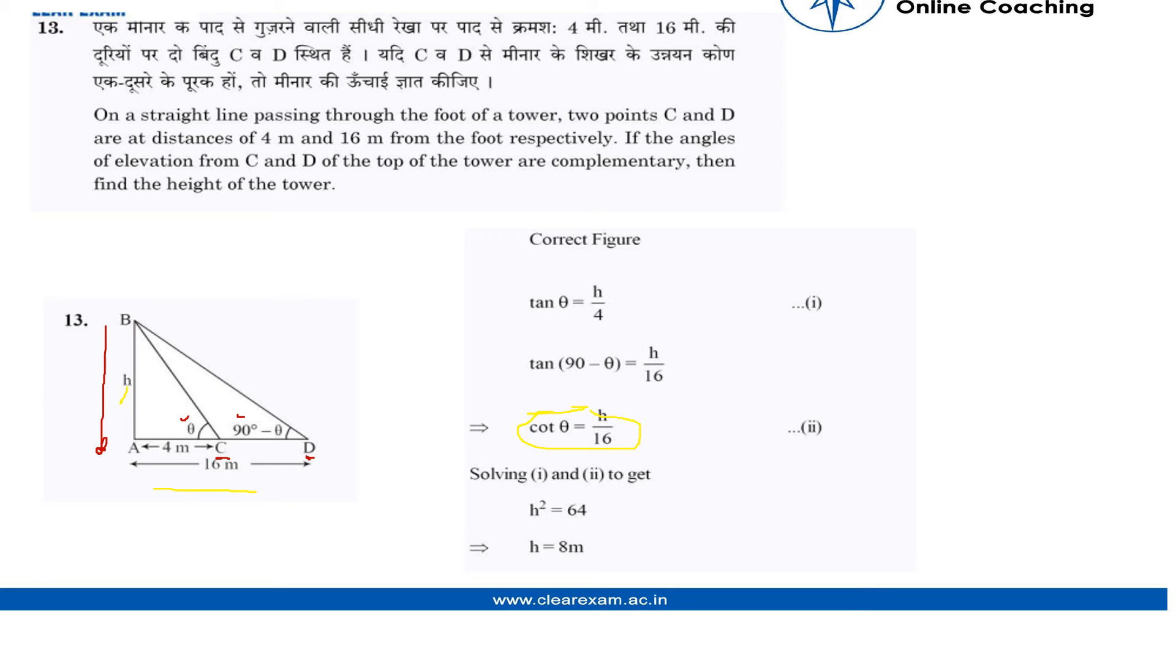So in a triangle, if we got to know that tan theta is h by 4 and cot theta is h by 16, so we can say that h by 4 is equal to 16 by h. So cross multiplying it, we get h squared is equal to 64, and height of the tower we get to be 8 meter.